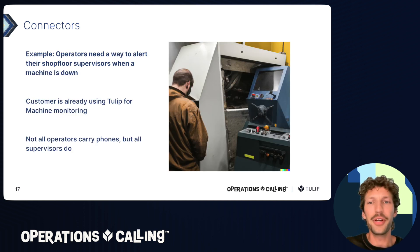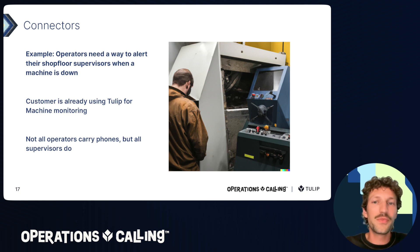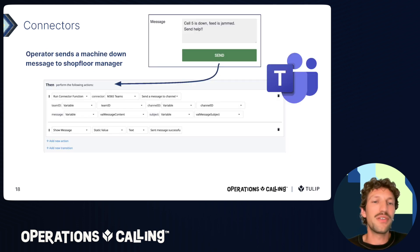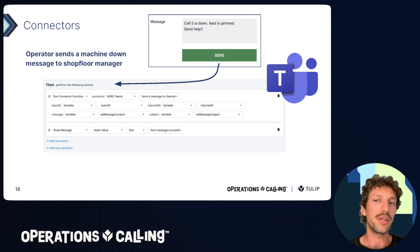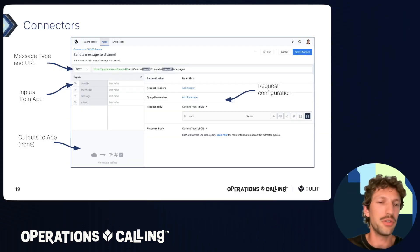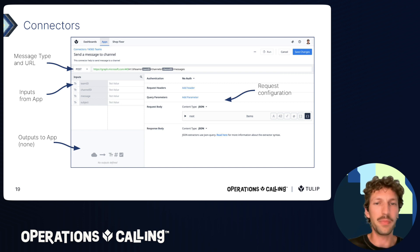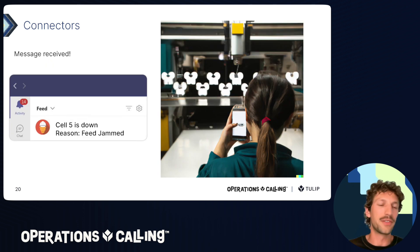Here's an example: an operator's machine is down and their supervisor is nowhere to be found. They're already using Tulip. A quick-thinking process engineer adds a flow to send a message on downtime using a built-in Microsoft Teams connector. Here's a single connector function — it operates using parameters sent from the application. You can see the URL at the top, the inputs from the application, and on the right you build the request body. This is the no-code part of building a connector. The supervisor is alerted and can immediately react. This connector, along with sample apps, is available for download in the library.